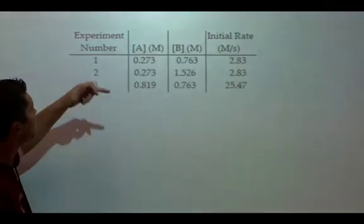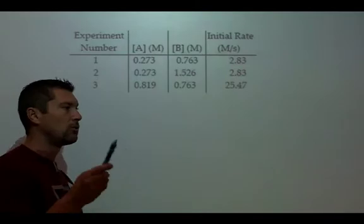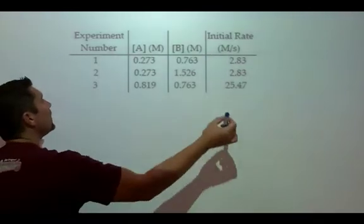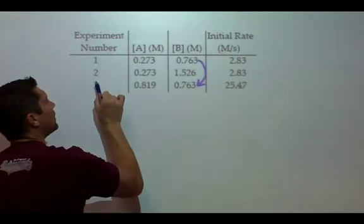This one's just going to be A and B. I've got three experiments and here's my rates over here. So the first thing you want to do is look for two experiments where something stays the same.